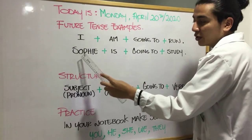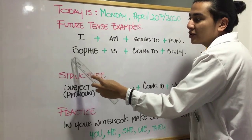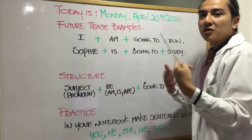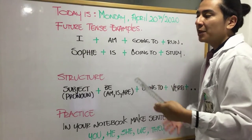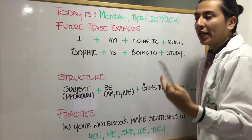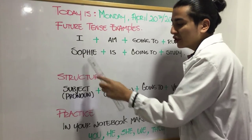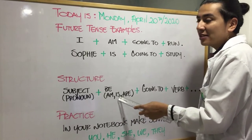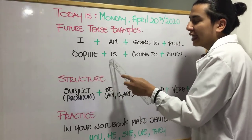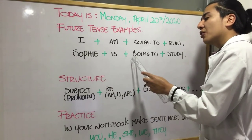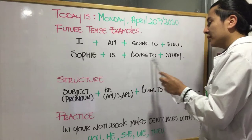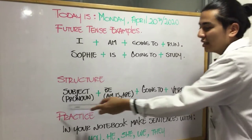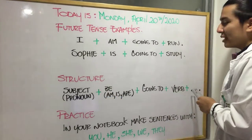Now the next example: Sophie. Sophie is replaced by the pronoun she, and she goes with is. So the complete sentence is: Sophie is going to study. That is the complete sentence and it follows the structure we have here.